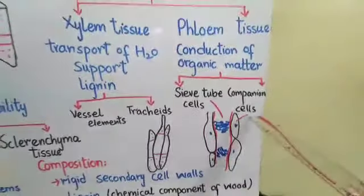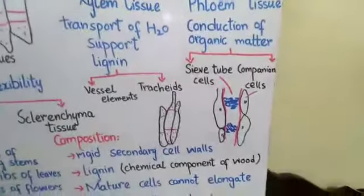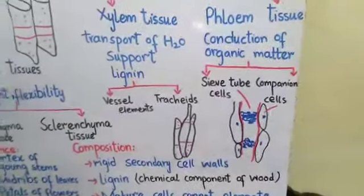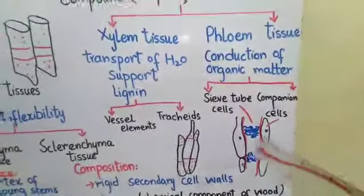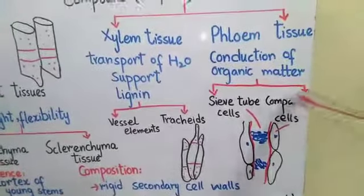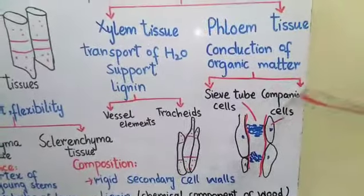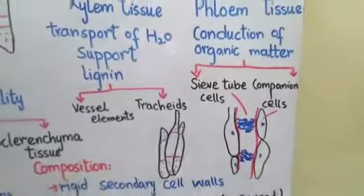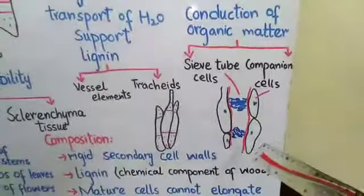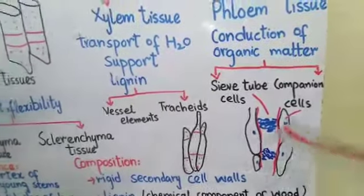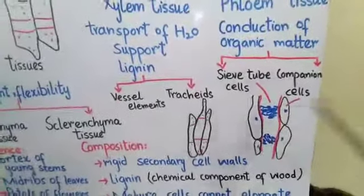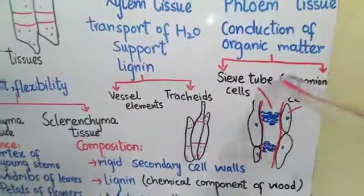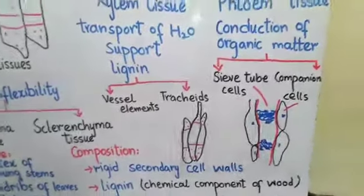The other type of phloem cell is companion cells. Sieve tube cells are associated with companion cells. What do companion cells do? They actually make proteins for the sieve tube cells. So their role is to be present alongside the sieve tube cells and to manufacture proteins for them.